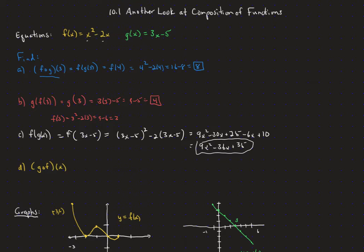For g composed with f of x, which means g of f of x, we plug all of f into our g function. So that means 3 times (x² − 2x) minus 5, which gives 3x² − 6x − 5.